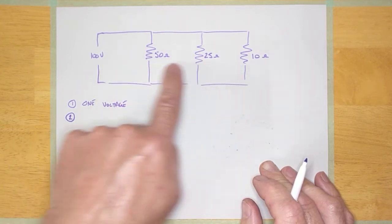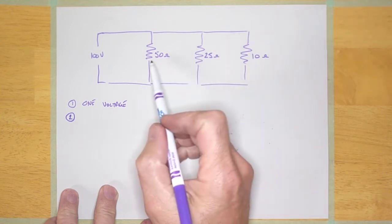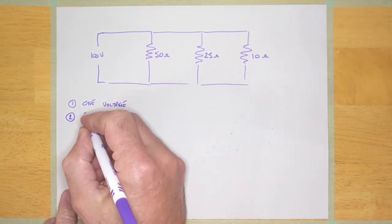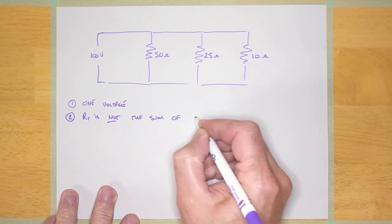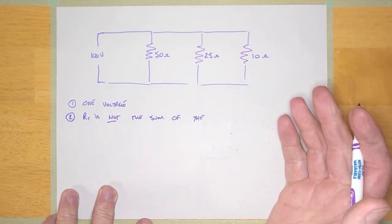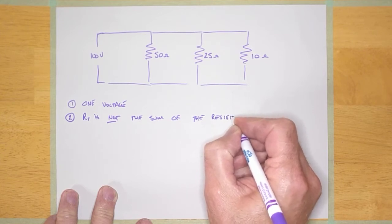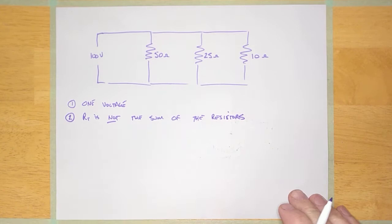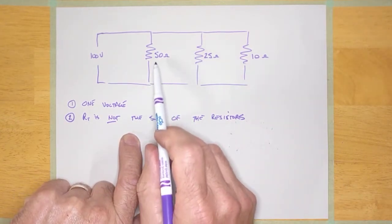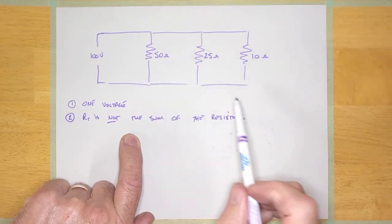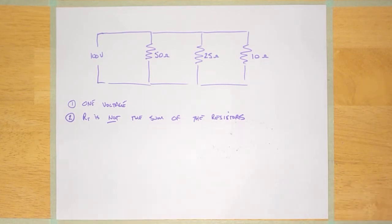Rule number two is more of a 'non-rule.' I want you to remember that RT for this circuit is NOT the sum of the resistors. RT is the sum of the resistors in a series circuit, but in a parallel circuit RT is not the sum. So you cannot calculate RT by going 50 plus 25 plus 10 — the total resistance is not going to be 85 ohms.